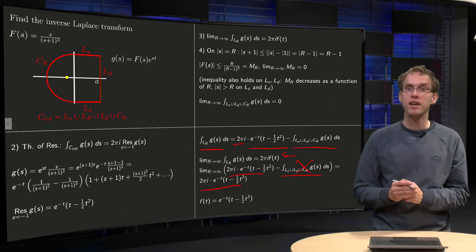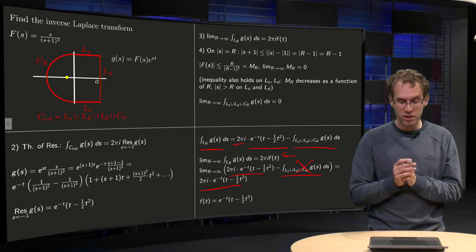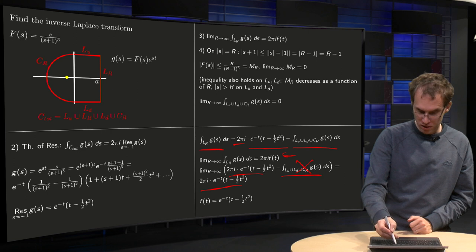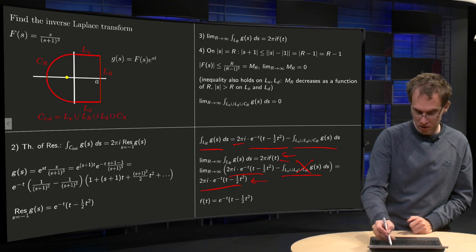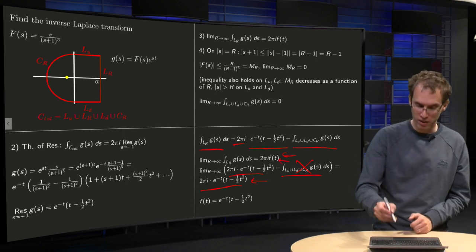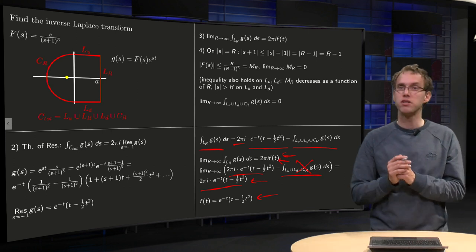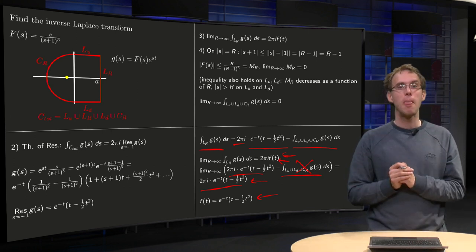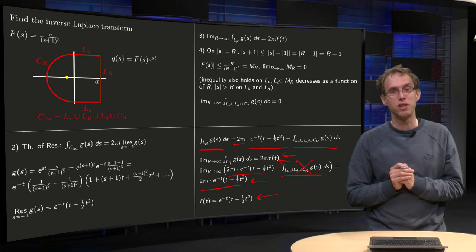And this one vanishes if you take R to infinity, so you are left with 2πi times e to the minus T times (T minus one half T squared), and left equals right, so this one equals that term over here. So we can figure out what F of T is. F of T equals e to the minus T times (T minus one half T squared), so there you have your inverse Laplace transform.